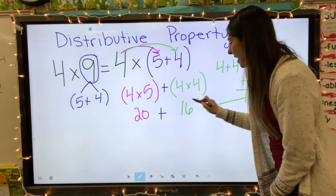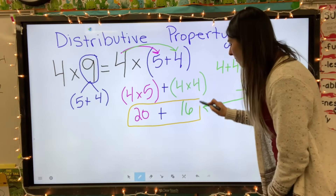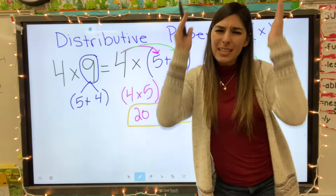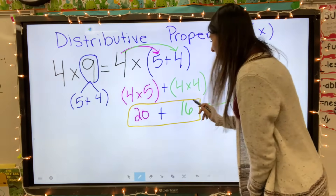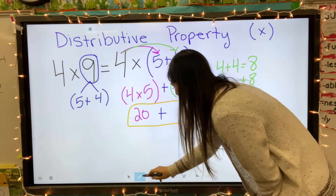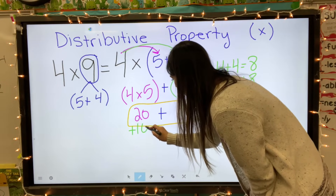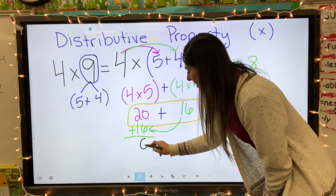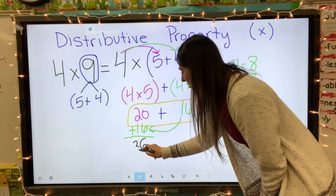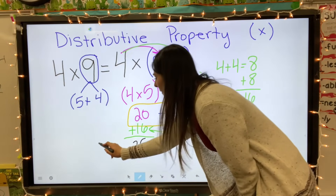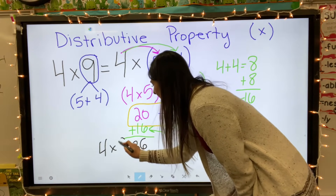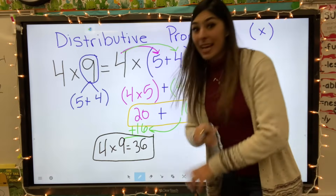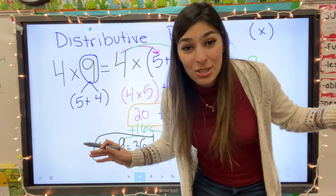Four plus four equals eight — that's one double. Second double: eight plus eight equals sixteen. So four times four equals sixteen. Now I have to solve this simple addition equation: what is twenty plus sixteen? I'm going to make it vertical so it's easier to solve. Zero plus six equals six, two plus one equals three — so four times nine equals thirty-six!